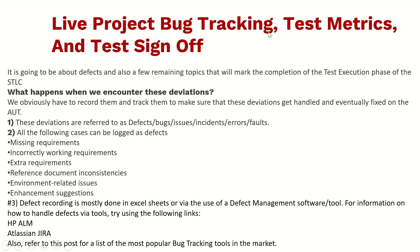This video is about defects and a few remaining topics that mark the completion of the test execution phase of the STLC — that is, Software Testing Life Cycle. When we encounter deviations, we have to recall and track them to make sure they get handled and eventually fixed. These deviations are referred to as defects, bugs, issues, incidents, errors, and faults.